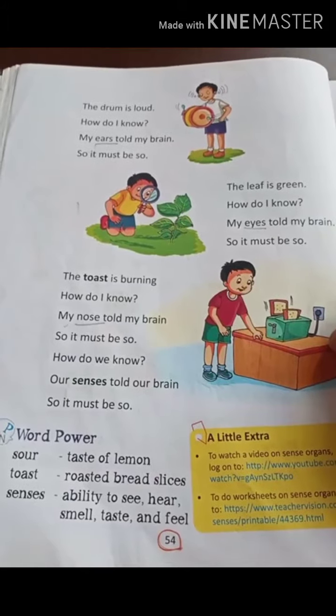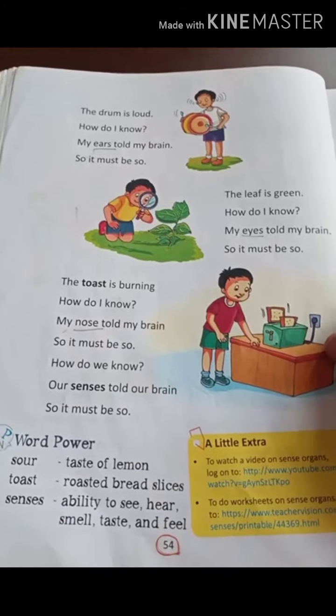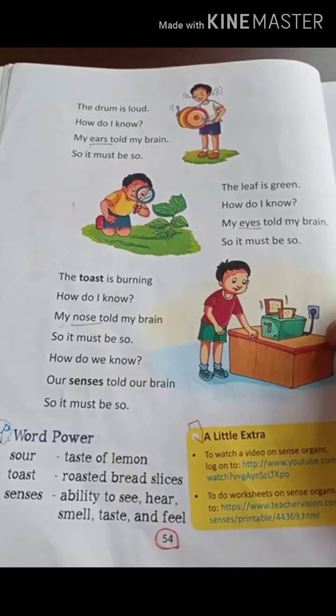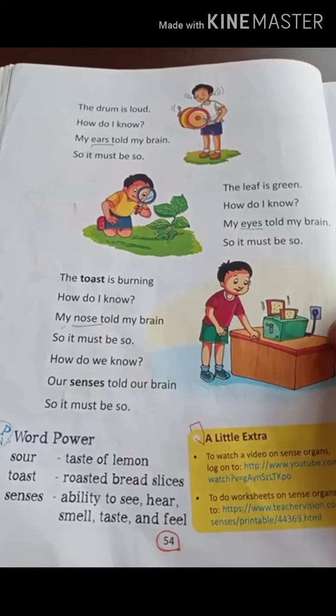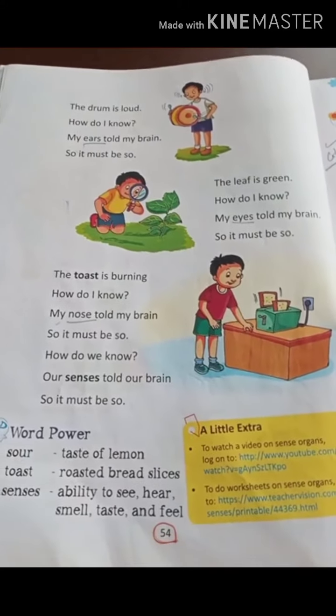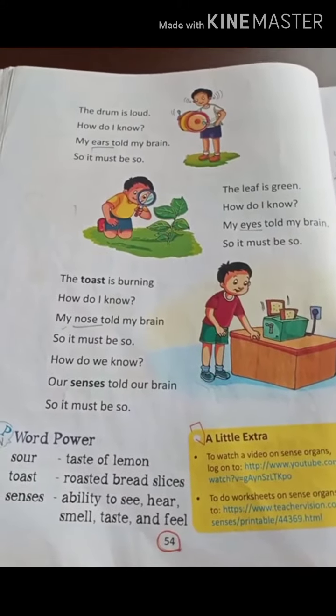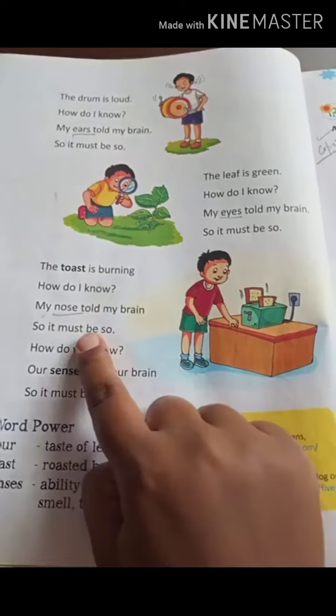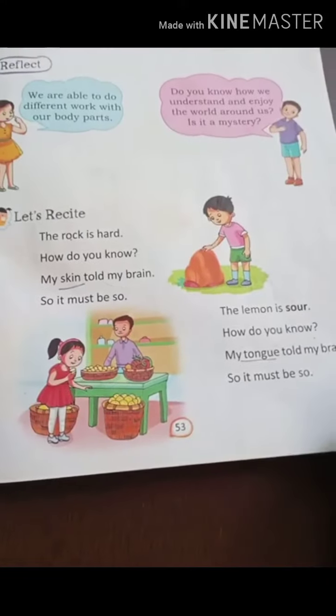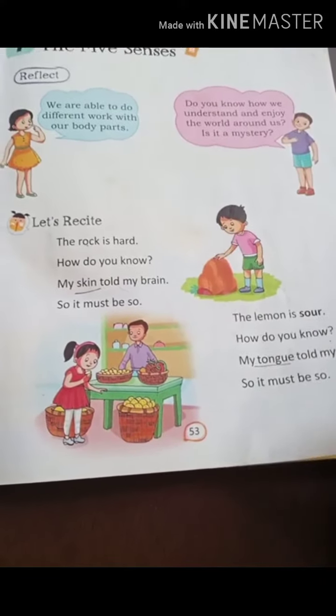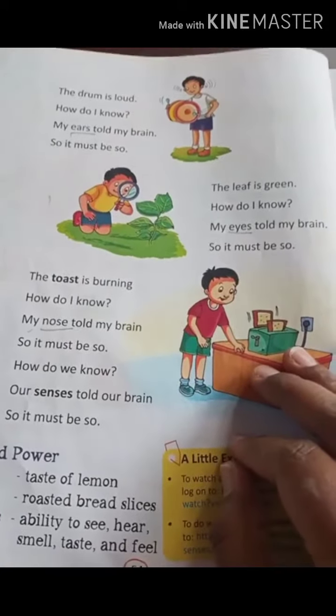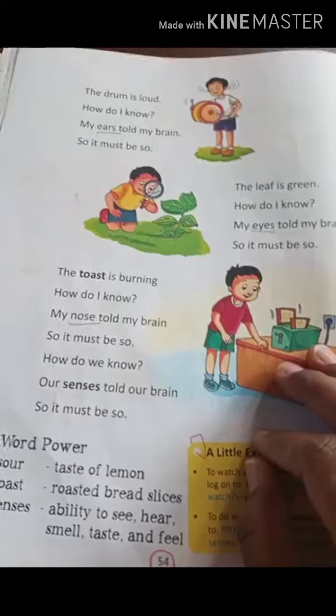How do we know? Our senses told our brain, so it must be so. These all come in your senses. Aapko bataathe hain ki toast kaise ban kar raha hai — by nose. Nose, ears, eyes, tongue, and skin. By skin we touch. By tongue we taste. By ears we hear. By eyes we see. And by nose we smell.